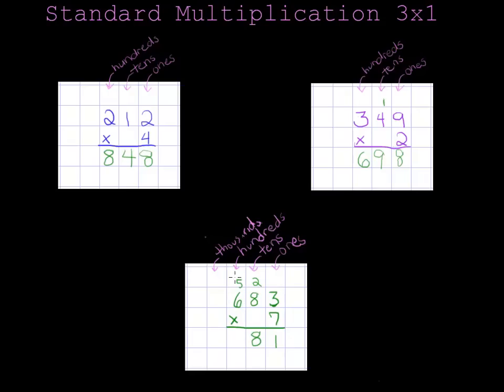Now I'll do 7 times 6, which is 42 plus 5 is 47. And I'll write that out in front and put my comma in. And I can see that my answer is 4781.